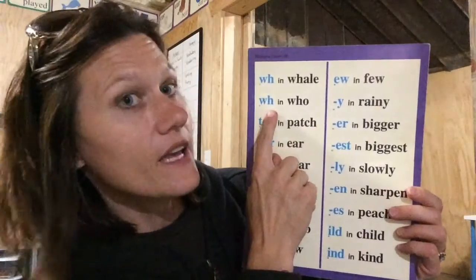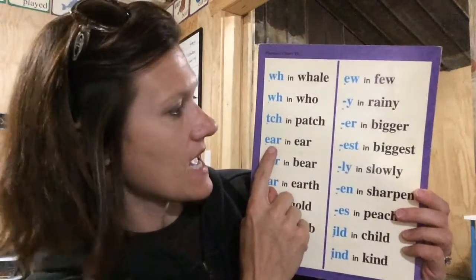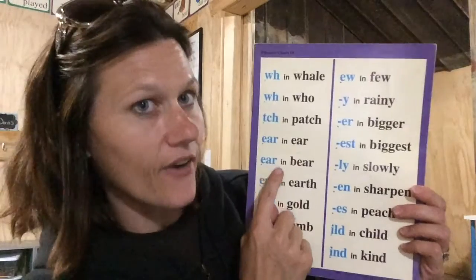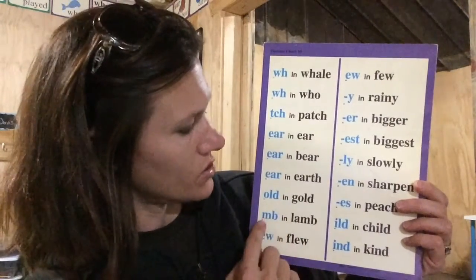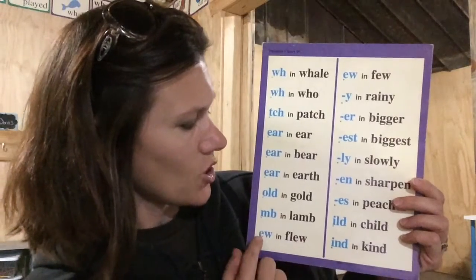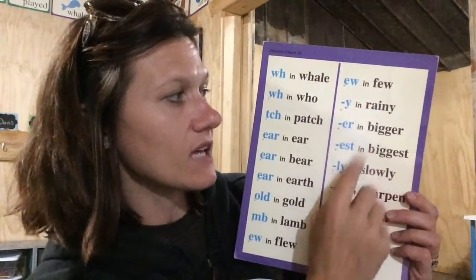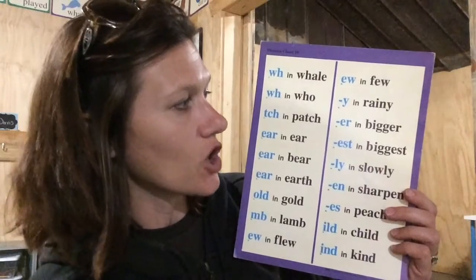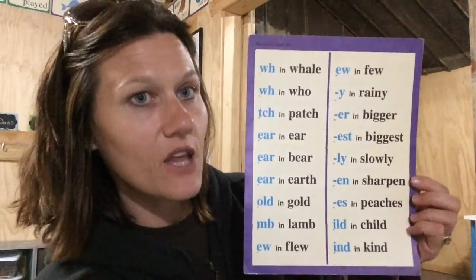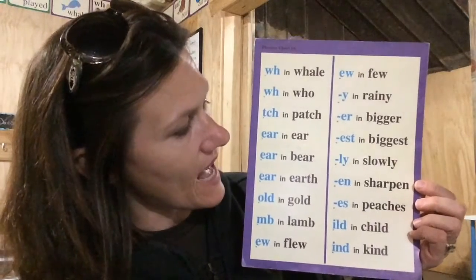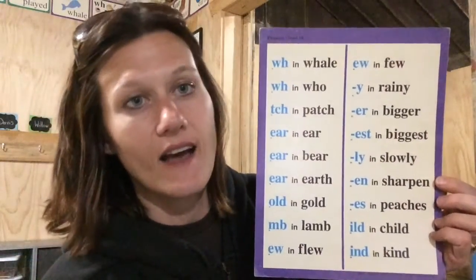Wa in whale, h in hoo, ch in patch, ear in ear, air in bear, ur in earth, old in gold, mm in lamb, oo in flu, u in few, e in rainy, ur in bigger, est in biggest, lee in slowly, n in sharpen, s in peaches, ild in child, and ind in kind.